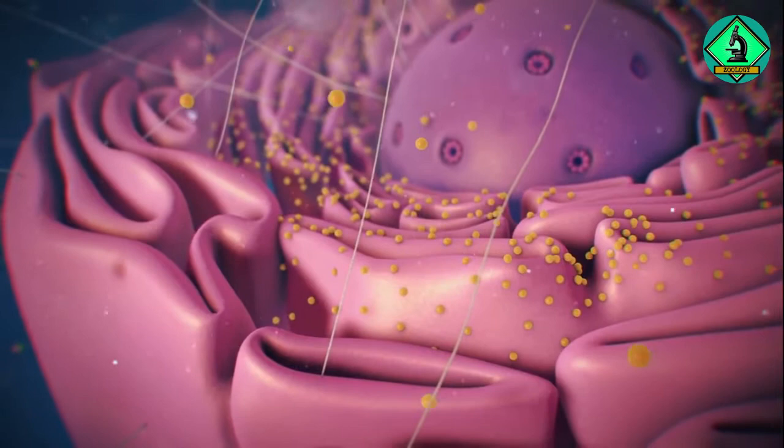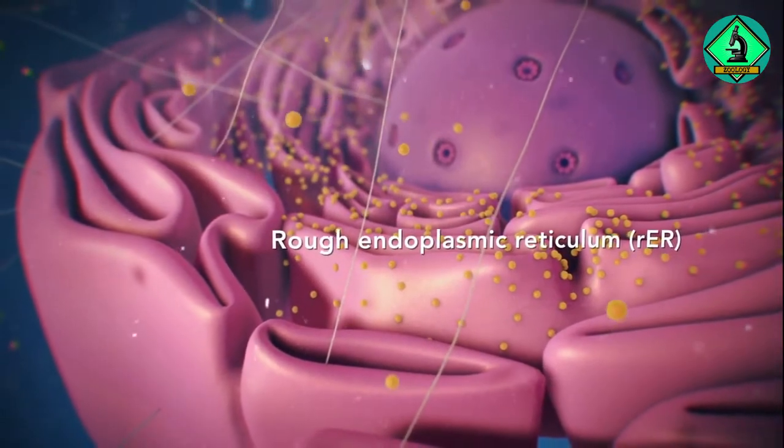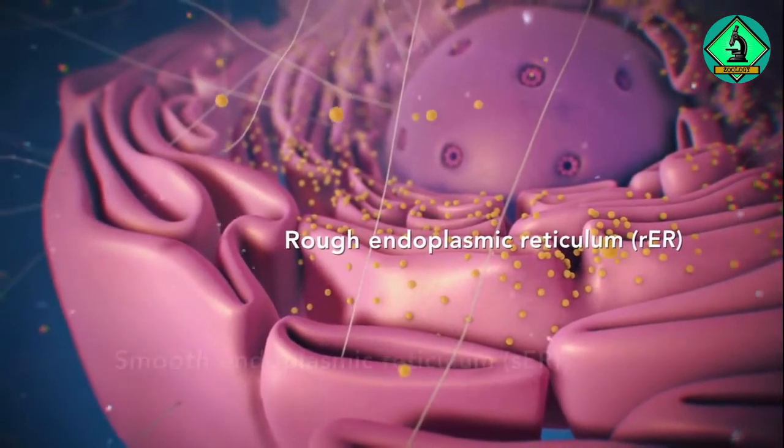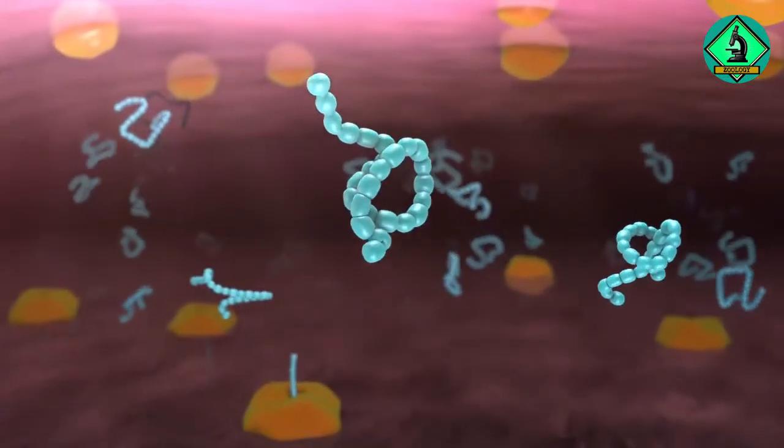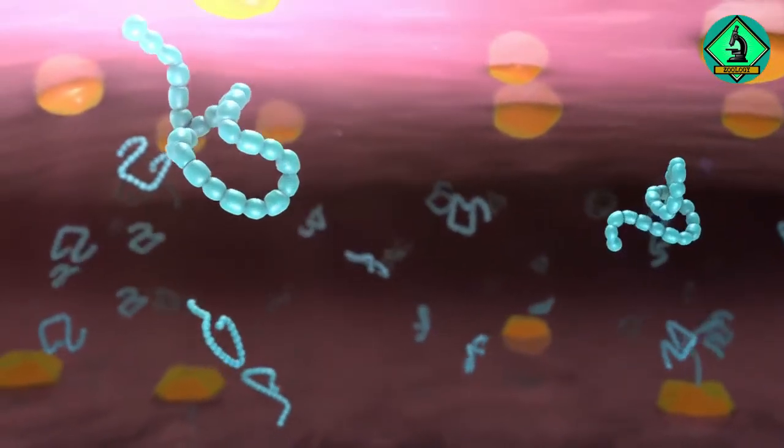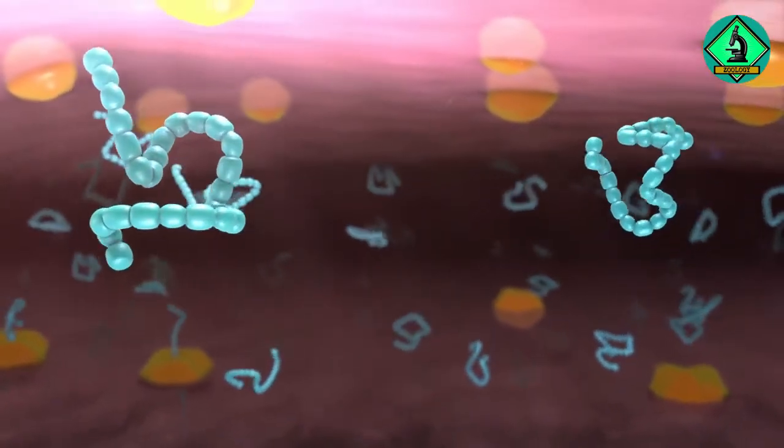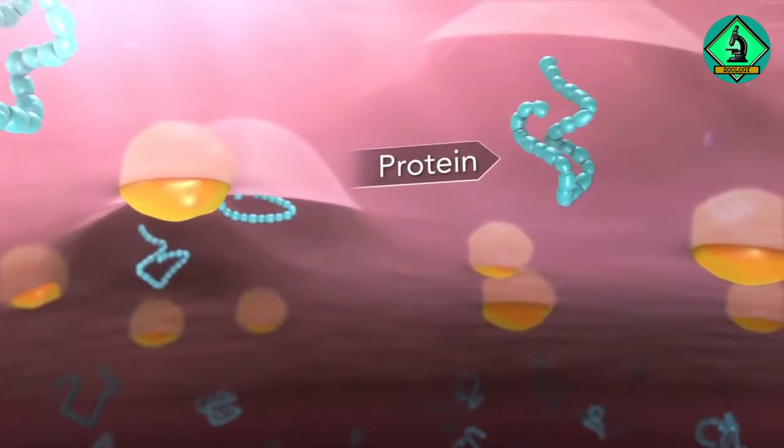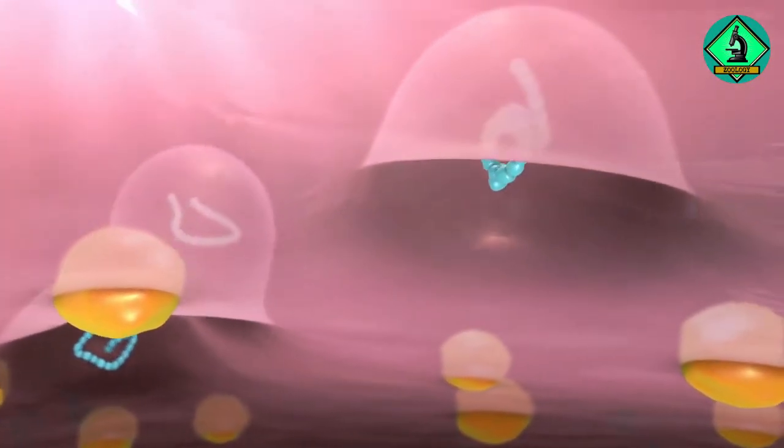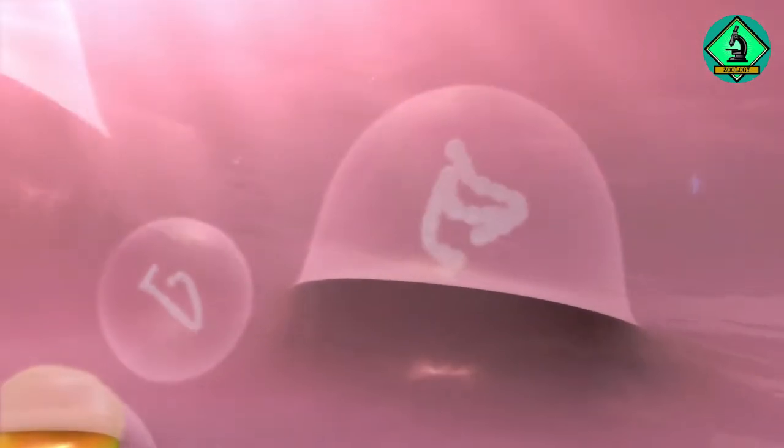There are two types of ER: rough ER has ribosomes attached to it, and smooth ER doesn't have ribosomes attached to it. The endoplasmic reticulum is a membrane-enclosed passageway for transporting materials such as the proteins synthesized by ribosomes.